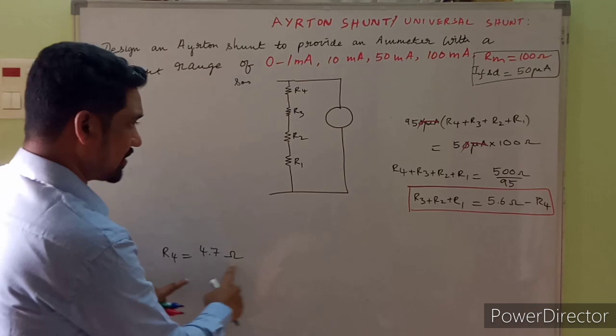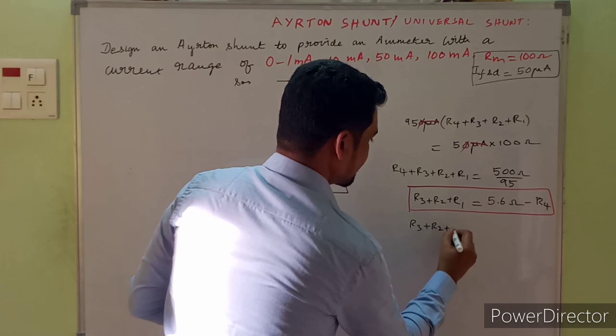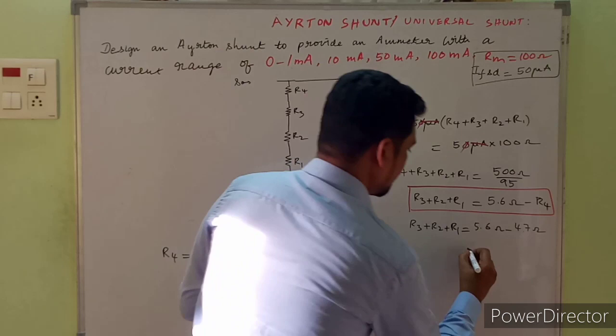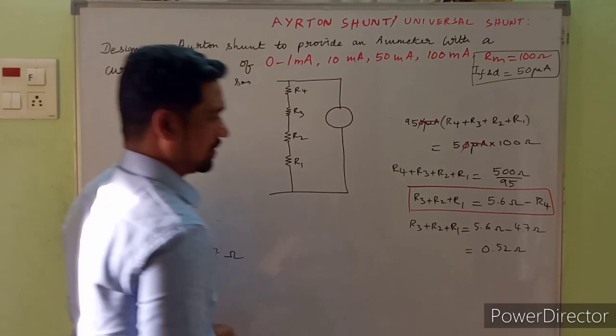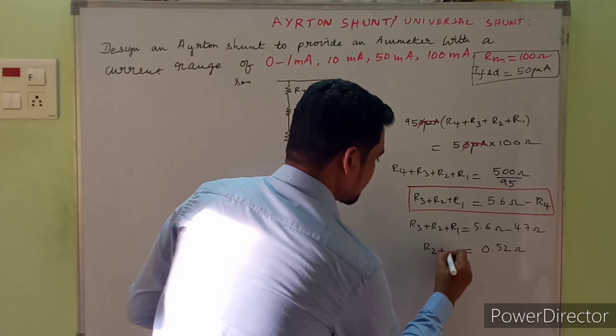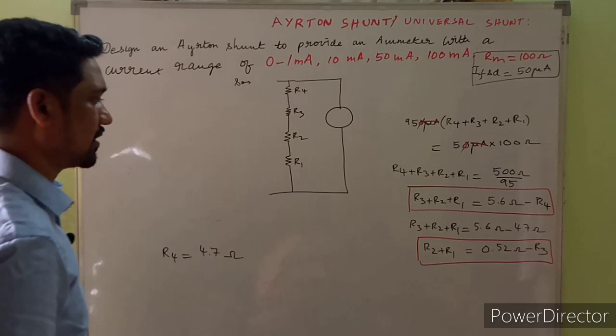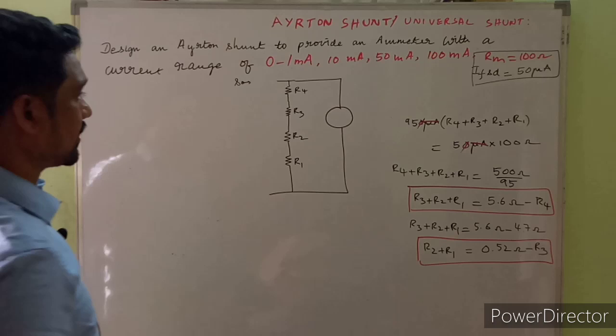Plugging in R4 = 4.7 ohms: R3 + R2 + R1 = 5.26 − 4.7 = 0.52 ohms. From this we can write R2 + R1 = 0.52 − R3. We once again need to look back at this to evaluate R3.